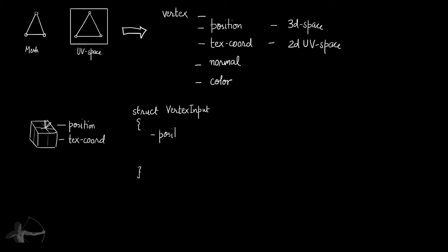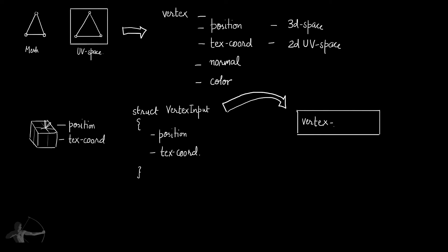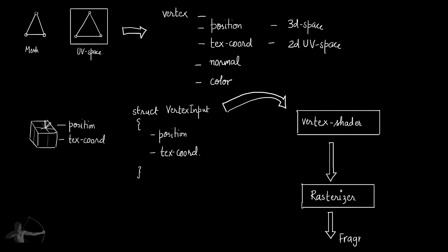Once we start reading the texture coordinate from the mesh, this packet will be passed to the vertex shader, and after that it will be passed to the fragment shader via the rasterizer. The rasterizer passes interpolated information to the fragment shader, and when the information reaches the fragment shader, every fragment will have its own texture coordinate.